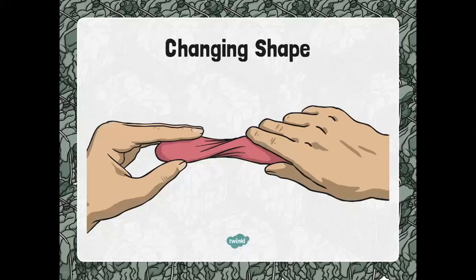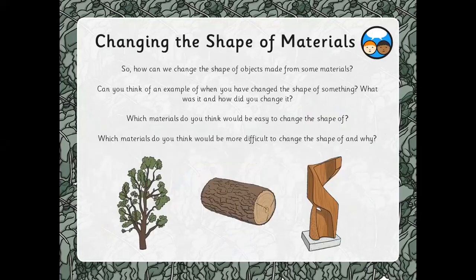So children, for our second science lesson on everyday materials, we're looking at how we might be able to change the shape of objects depending on the material that they are made from.